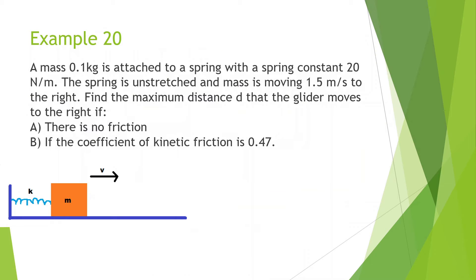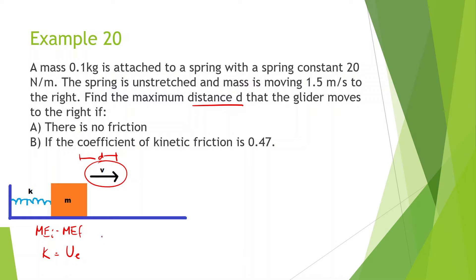Let's look at this first problem. A mass of 0.1 kg is attached to a spring with a spring constant of 20 N/m. The spring is unstretched and the mass is moving 1.5 meters per second to the right. Find the maximum distance D that the glider moves if there is no friction. It's a simple mechanical energy initial equals mechanical energy final problem. At the beginning there's kinetic energy, and at the end it's stretched a maximum distance D, giving us elastic potential energy. So we have one-half times 0.1 times 1.5 squared equals one-half times 20 times D squared.